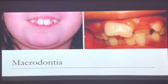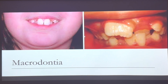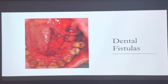Macrodontia came up for the certification exam. In technology, micro means small and macro means large — and 'donchia' means tooth, so macrodontia is simply a large tooth. In the picture on the right, that is actually a central and a lateral fused together during development. There are several different ways to treat that, so when you go to chart it, ask the dentist for specifics. The last condition is dental fistulas — this is just where there's a break in the skin providing a means for things to travel through.